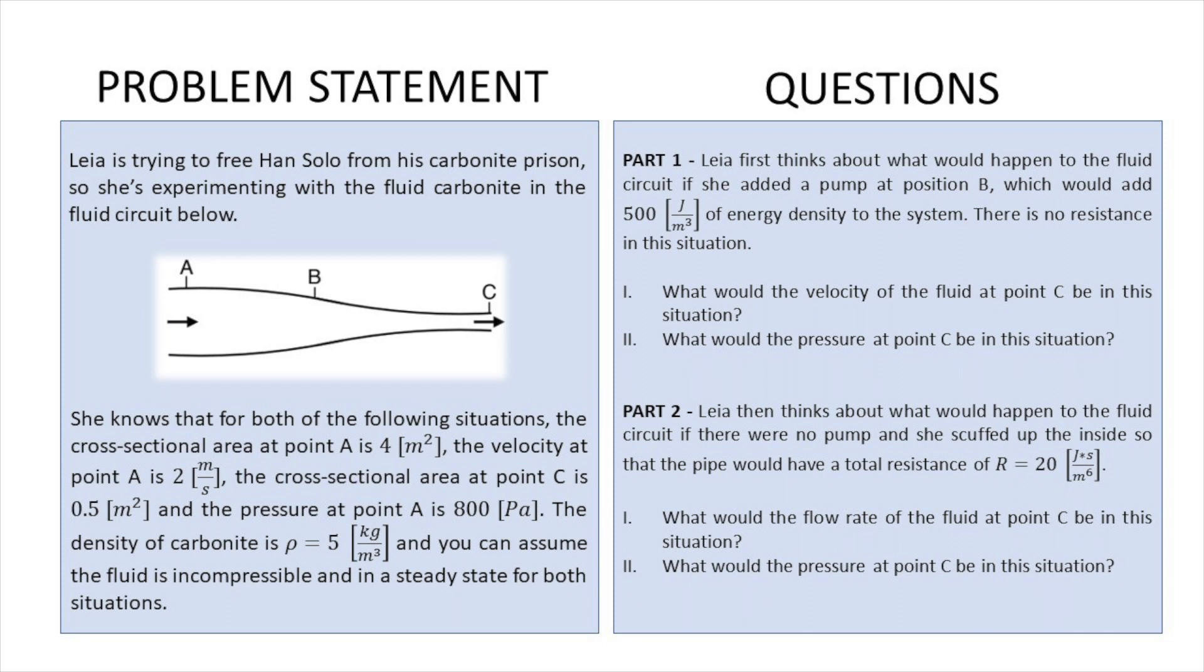So let's go ahead and read Part A. Leah first thinks about what would happen to the fluid circuit if she adds a pump at position B, which is in the middle, which would add 500 joules per meter cubed of energy density to the system. There is no resistance in this situation. What would be the velocity of the fluid at point C and what would be the pressure at point C in this situation?